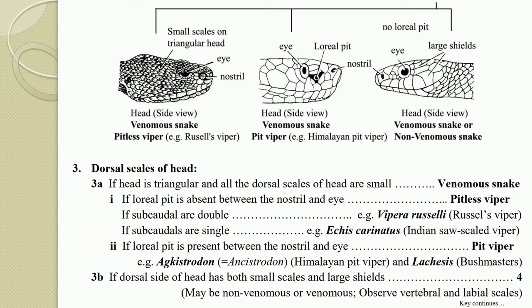If neither the pitless viper nor pit viper characteristics apply, proceed to key 3B. Key 3B: If the dorsal side of the head has both small scales and large shields — as seen in the third diagram — that snake may belong to the non-venomous or venomous category. At that point, follow key 4 and observe the vertebral scales as well as the labial scales.